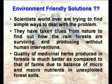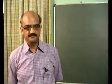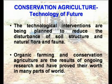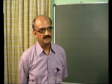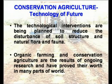The micronutrients available in forest soil are able to produce very good quality herbal plants, whereas herbal plants grown on farms are inferior in quality. Based on various research and field work, the conservation agriculture technology was developed. The main aim is to reduce disturbance of the soil. Soil has its own natural structure, its own flora and fauna — microorganisms that naturally work to increase and maintain fertility. Organic farming and conservation agriculture are the two results that have been proven as technologies of the future.